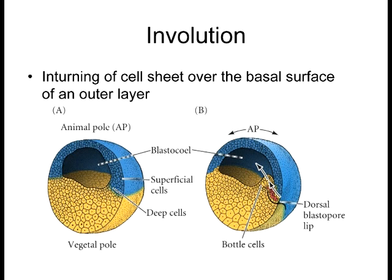The prime example of involution is in the frog, or Xenopus. At the junction where the ectoderm and endoderm meet, mesoderm is also present. This area is called the organizing center. At this location, cells start turning inward underneath an outer layer — that's involution. It's not invagination because you're not getting an entire sheet folding inward to create a pit; instead, one sheet turns up underneath another sheet.